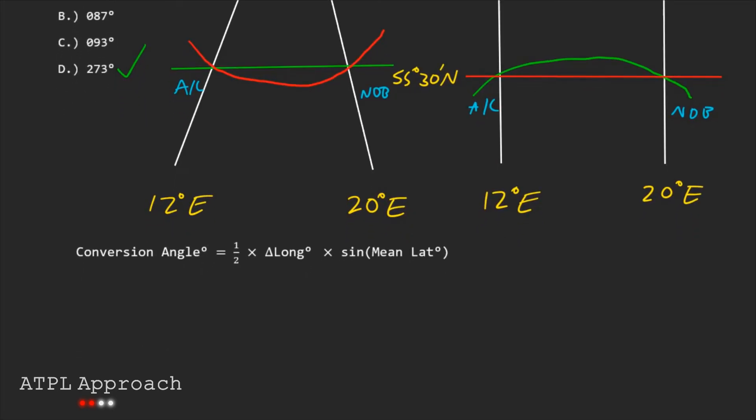So when using a chart the conversion angle would actually become this, where that Po is the parallel origin and we already said that's 45 degrees. So now we just need to work out the change in longitude. This one's pretty easy because the difference between 12 and 20 is 8. So let's put that all in there. Half times 8 times sine 45. And if we do that we get about 2.8 degrees. And adding the 2.8 to 270, well roughly gives us 273 degrees. Which is our answer up here.